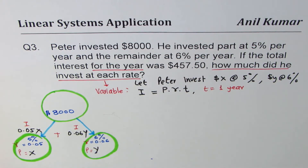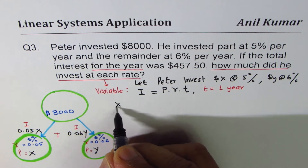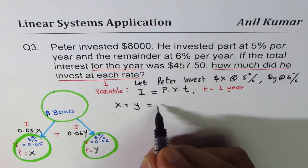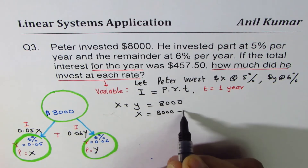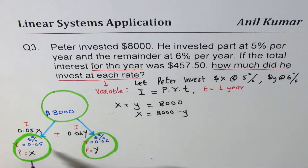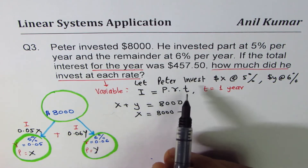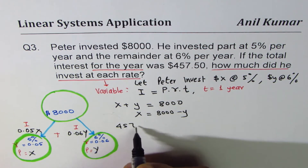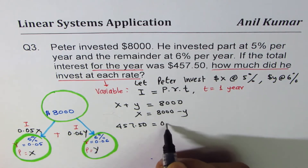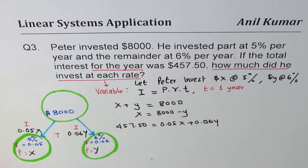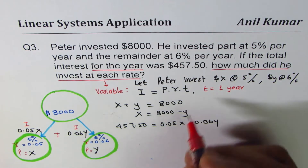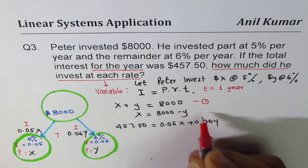We can now write both equations. Equation one: x + y = 8,000. Whenever we write one equation we can isolate a variable, so x = 8,000 − y — call this equation three. Equation two: 0.05x + 0.06y = 457.50.